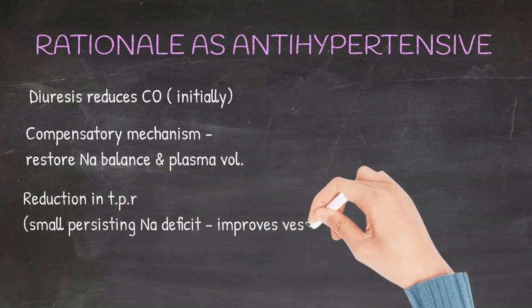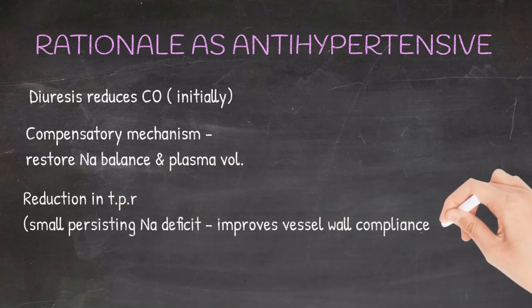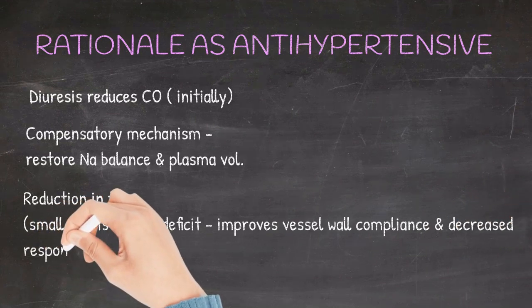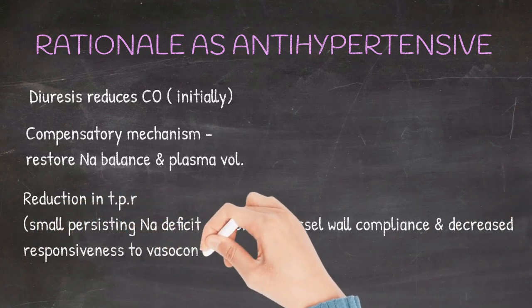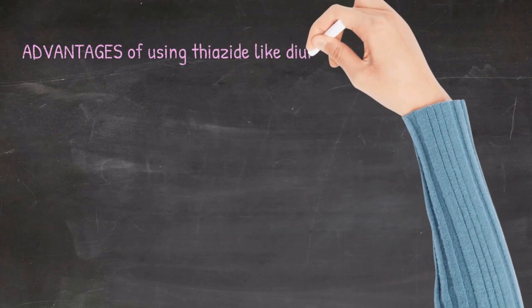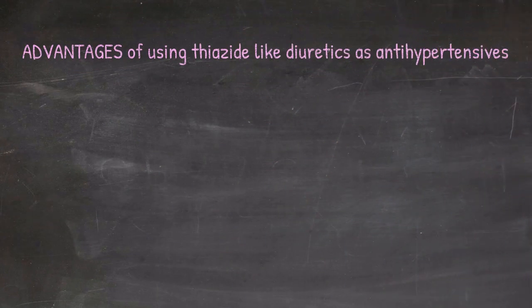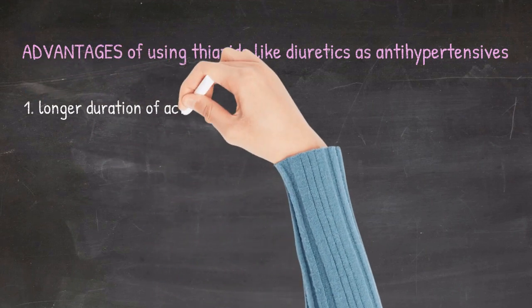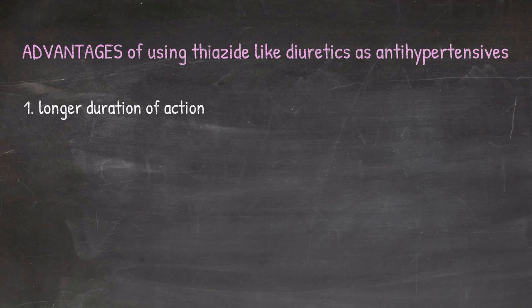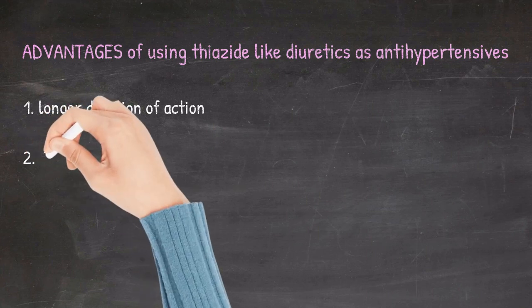Advantages of using thiazide-like diuretics as antihypertensives: these group of drugs have a longer duration of action compared to loop diuretics, permitting once daily dosing. They have a flat dose response curve, meaning there are less chance of electrolyte imbalances and other adverse effects.